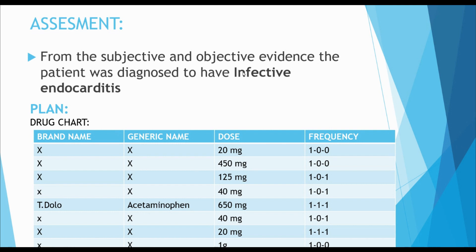For example, we have a sample of Infective Endocarditis — you can use any disease. From the subjective and objective evidence, the patient was diagnosed to have hypertension. Now we have a Plan. In the SOAP format, if we have laboratory investigation findings, we can confirm the diagnosis.